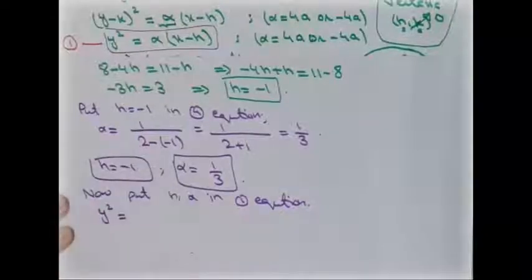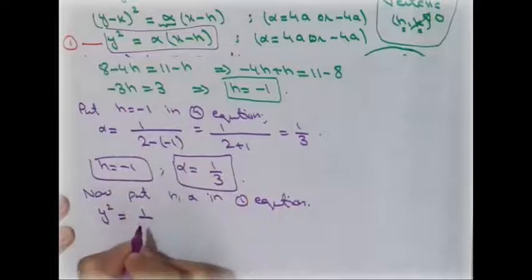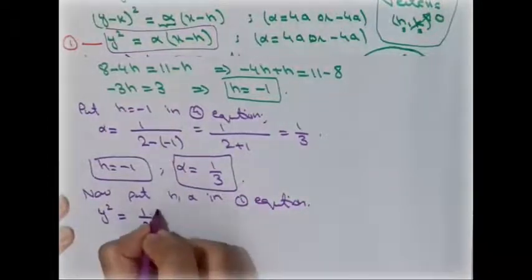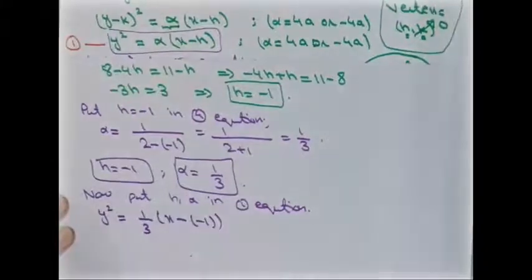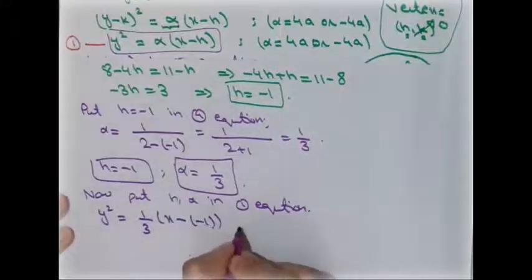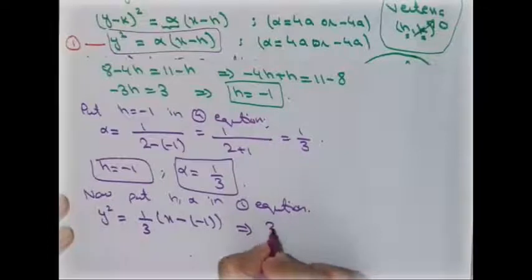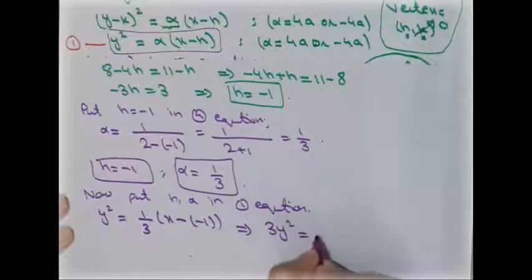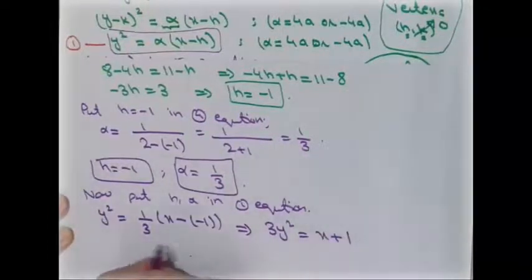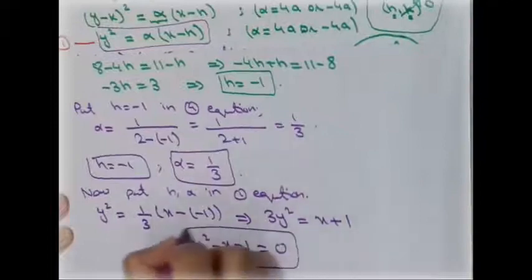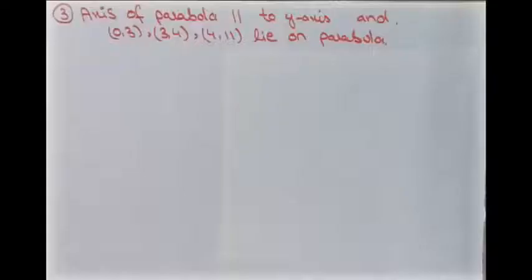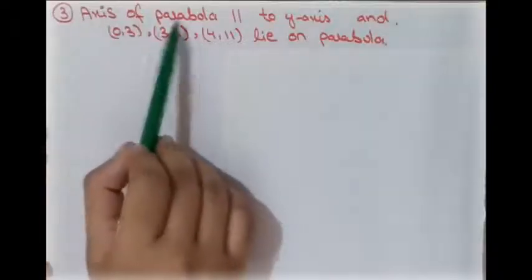Substituting alpha = 1/3 and h = -1 into our first equation: y² = (1/3)(x - (-1)), which gives y² = (1/3)(x + 1). Multiplying through by 3: 3y² = x + 1, so the final equation is 3y² - x - 1 = 0.